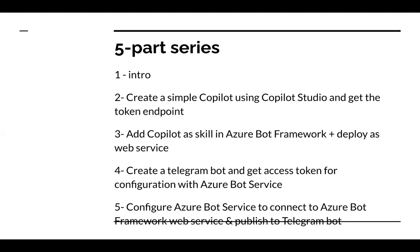This tutorial is going to be very complex, so I'm going to do it in a five-part series. This first one is an intro so you know what we're going to build. In the second part, we will create a simple CoPilot using CoPilot Studio and get the token endpoint. In the next video, we will add this CoPilot as a skill in the Azure Bot Framework and deploy it as a web service so the bot service can connect to it. Then we'll create a Telegram bot — I'll show you how to get an access token, which you'll connect to Azure Bot service, and then connect Azure Bot service to Bot Framework and publish to Telegram. Note: there's a line on the slide that looks like a strikethrough — that's not intentional, so I apologize for that.